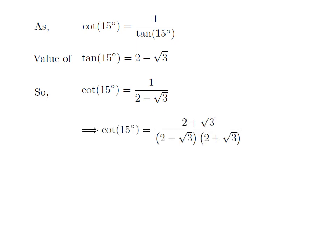Let us simplify the fraction by multiplying the numerator and the denominator by 2 plus square root of 3, as multiplying the numerator and the denominator of a fraction by a common number doesn't change the fraction. The denominator is in the form of a minus b into a plus b, and a minus b into a plus b is equal to the square of a minus the square of b.